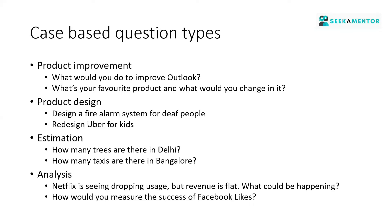The first type is the product improvement question. You're given a product — usually a popular one — and asked to improve it in some manner. A typical question is: what would you do to improve Outlook? Another very common question is: what's your favorite product? Sometimes interviewers ask why you like it; other times they ask you to suggest improvements. This question is asked so frequently that I'd suggest you have a product in mind that you know inside and out and have already thought through a few improvements for.